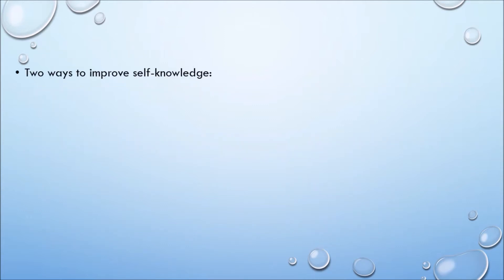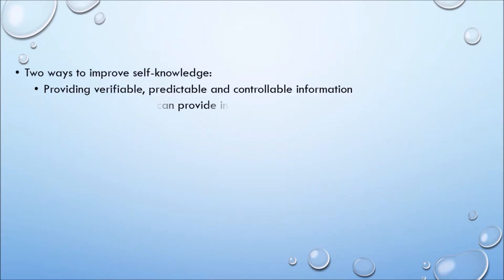Two ways to improve self-knowledge are: providing verifiable, predictable, and controllable information; and self-disclosing so others can provide insights into your behavior.